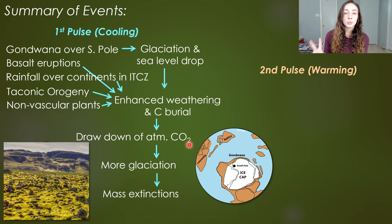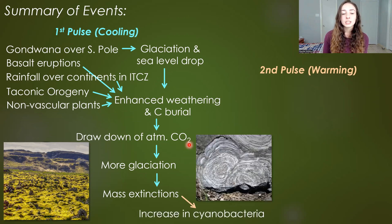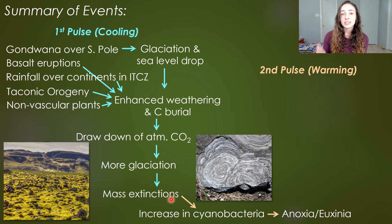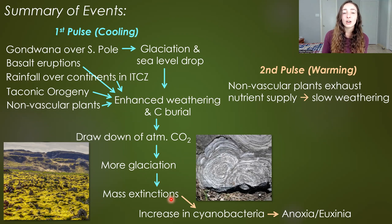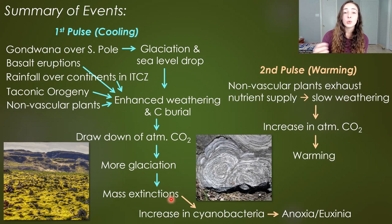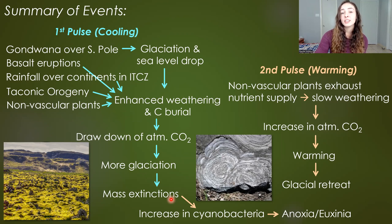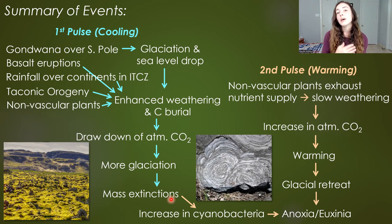The second pulse or warming event was marked by an increase in cyanobacteria due to extinctions that wiped out many of their grazers. They led to anoxia and euxinia that caused major mass extinctions. The quick spread of nonvascular plants likely also exhausted their nutrient supply, allowing atmospheric CO2 to increase and warming to occur after the cooling event. Glacial retreat contributed to upwelling that provided surface blooms with more nutrients, further increasing anoxia, euxinia, and mass extinctions of oxygen-dependent organisms.